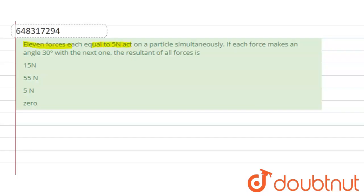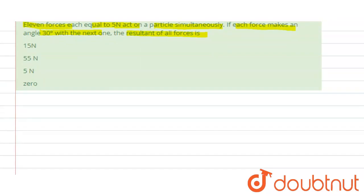11 forces, each equal to 5 newton, act on a particle simultaneously. If each force makes an angle 30 degrees with the next one, then the resultant of all the forces will be? According to the question, 11 forces are equal to 5 newton.